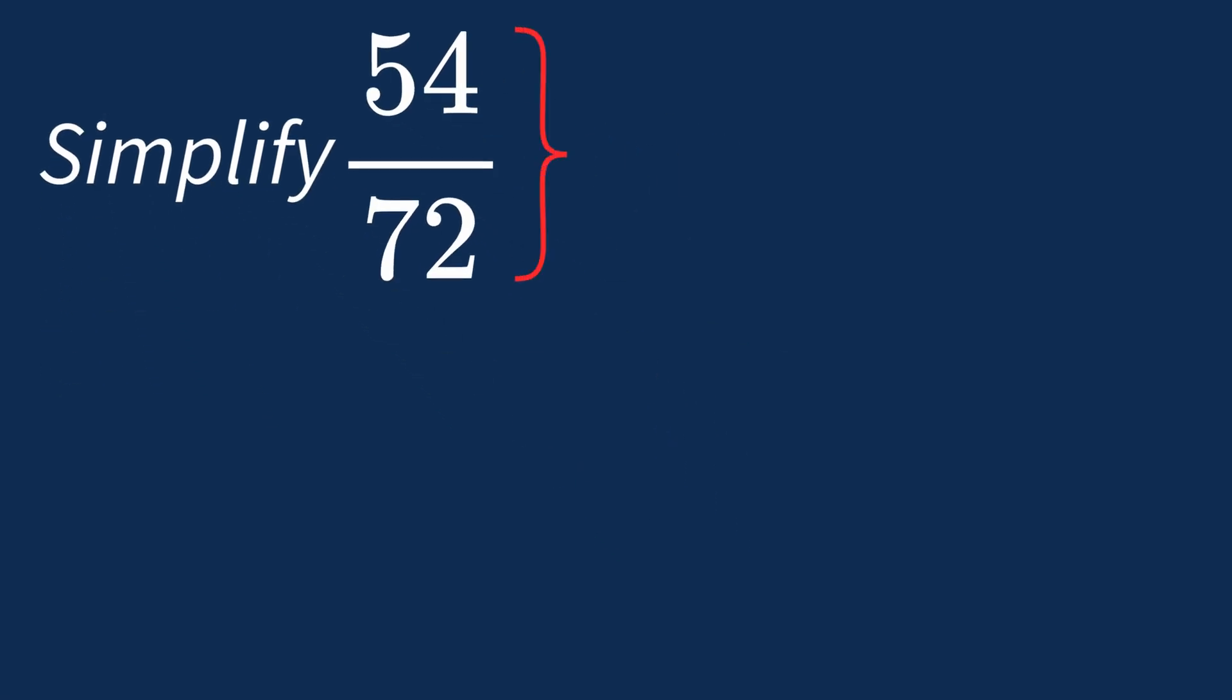To simplify 54 over 72, we need to look for the common factors between the top number, the numerator, and the bottom number, the denominator.